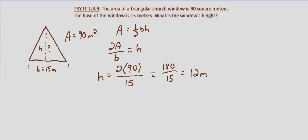So to check we could simply plug back into our original formula. Area equals one half base times height. And make sure that it does indeed equal 90 square meters.